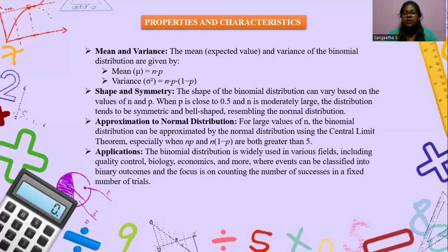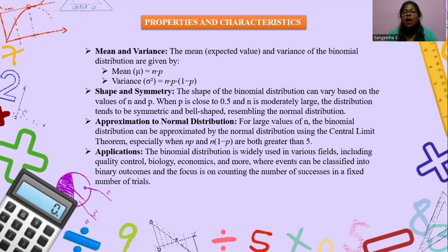Approximation to normal distribution: for large values of N, the binomial distribution can be approximated by the normal distribution using the central limit theorem, especially when N×P and N×(1−P) are both greater than 5. Applications: binomial distributions are used widely in various fields including quality control, biology, economics and more, where events can be classified into binary outcomes and the focus is on counting the number of successes in a fixed number of trials.